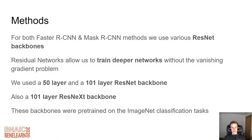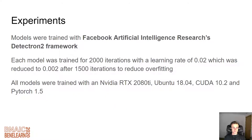As for methods: we use Faster RCNN and Mask RCNN with various residual backbones. Residual networks allow us to train deeper networks without the vanishing gradient problem. Specifically, we used a 50-layer and a 101-layer ResNet backbone, as well as a 101-layer ResNeXt backbone. These were all pre-trained on image classification tasks by Facebook on the Detectron 2 system. Here is some of the hardware and software used for the experiments.